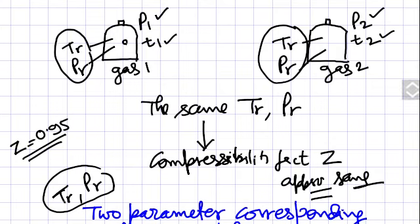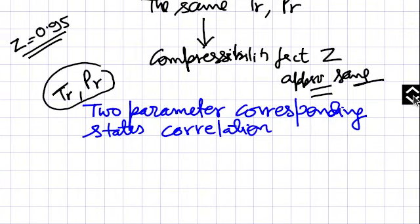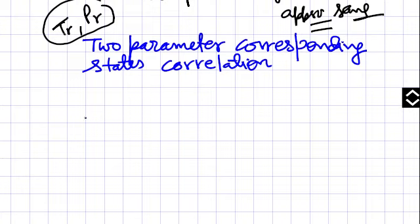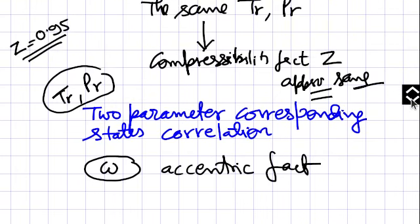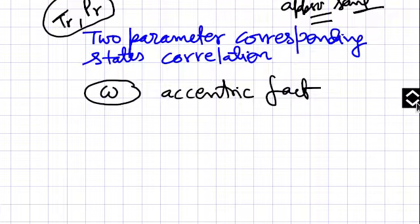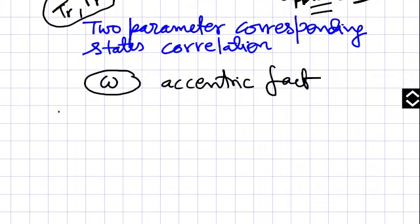It was found that because of different molecular structures — suppose one gas has this kind of molecule and another gas has a different kind — this molecular structure difference was giving wrong results. After studies, a new parameter was introduced called omega, or the acentric factor. By experimentation, acentric factors of all gases were found.